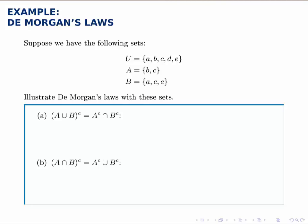Starting on the left hand side, if we take A union B we'll take all the elements from A and add in those from B. So we need to add the A, we already have C, and we'll add E. Then if we look for the complement of this union, we'll look for what's in the universe but not in A union B.